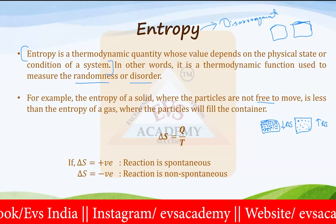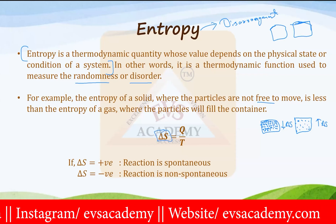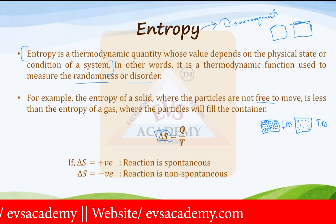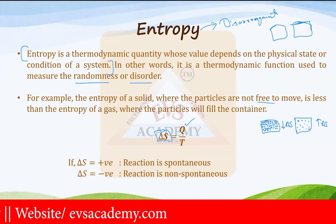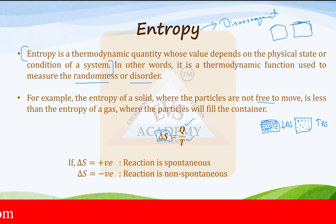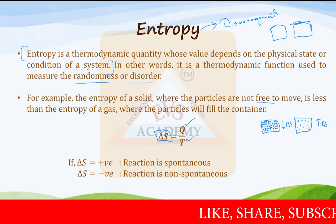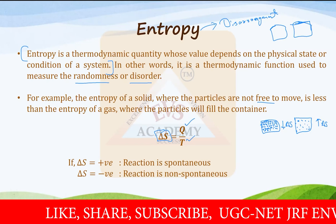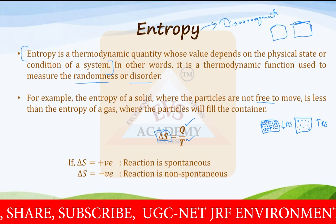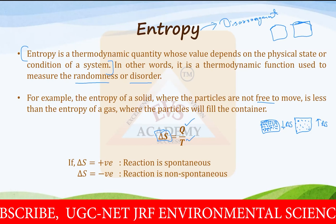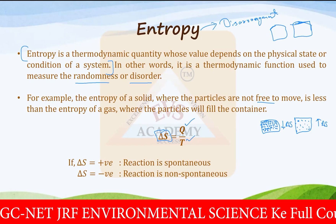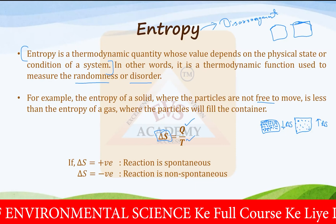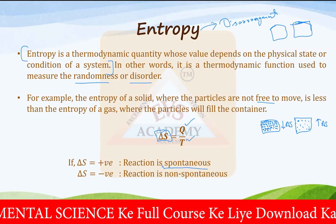How to measure this entropy? Entropy can be measured as Q divided by T, where Q is the internal energy and T is the temperature of that particular system. So if you divide these two quantities, you will get the delta S value. Delta S is positive if the reaction is spontaneous, and delta S is negative if the reaction is non-spontaneous. Spontaneous means without any external force the reaction automatically takes place.